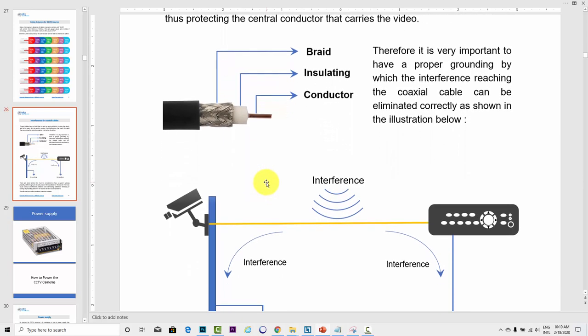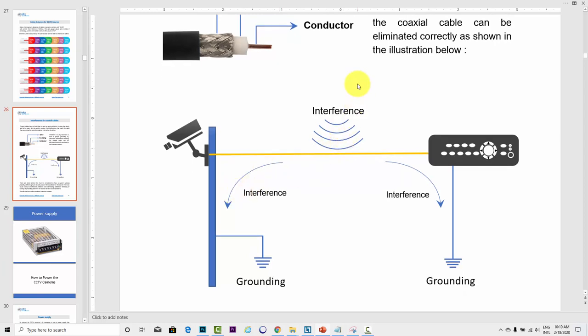And here in the diagram, you can see an example of the interference. The interference is an electromagnetic interference. For example, it comes here to the cable, the coaxial cable, and then the interference can run in this cable, arrive here in the camera, in the pole, and then go to the ground. So you need to ground your system.